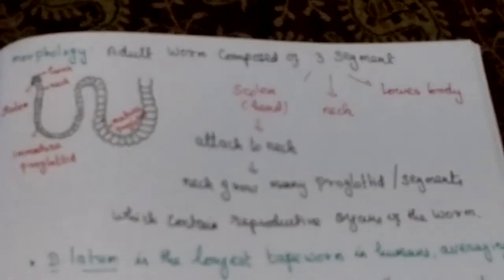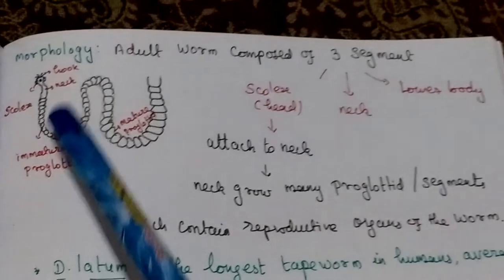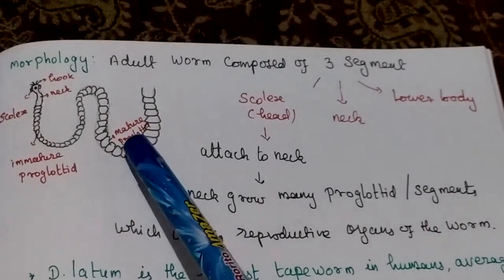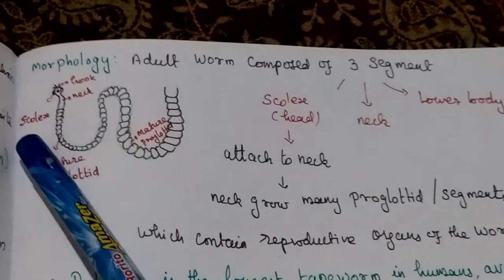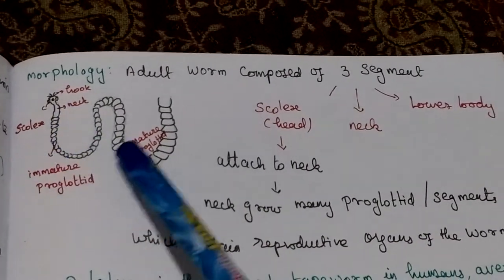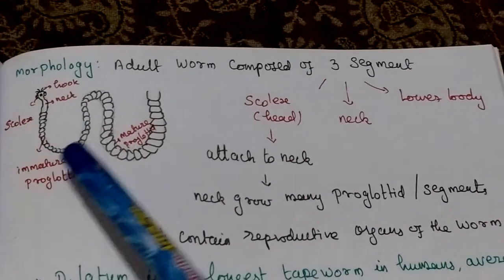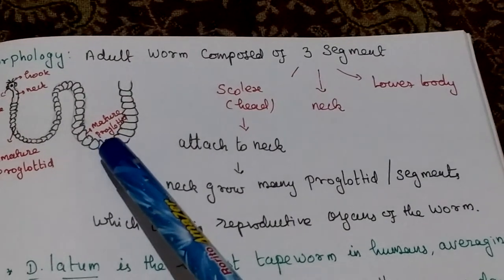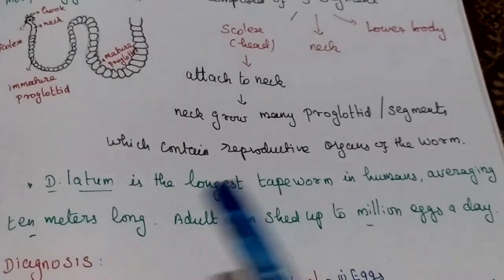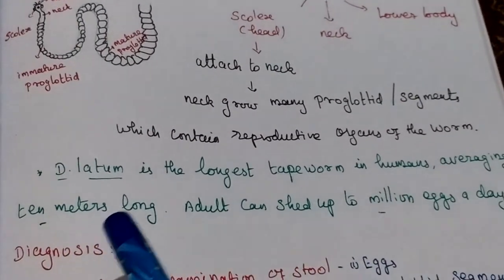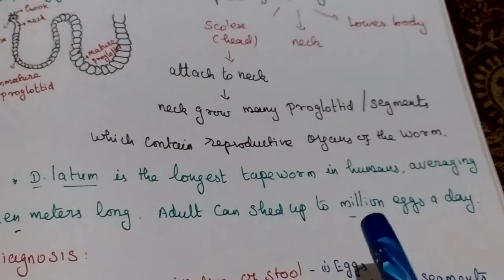Morphology: the adult worm is composed of three segments — the head part (scolex), the neck, and the lower body (proglottids). The head part has hooks and the scolex region. The neck attaches to the proglottid part. Immature proglottids do not reproduce; only mature proglottids allow reproduction. This fish tapeworm is 10 meters in length, and the adult can lay 1 million eggs per day.